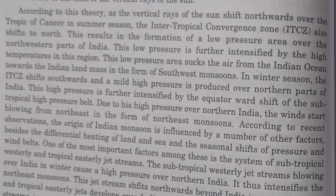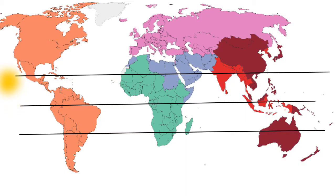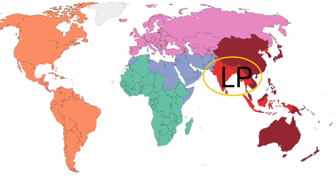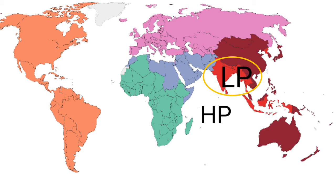Rainfall is caused in the equatorial area, but during the summer season the ITCZ shifts towards the north, as you can see in the diagram. The ITCZ shifts towards the Tropic of Cancer in the month of July. The low pressure already formed over the Indian landmass becomes more intense because of this shifting of ITCZ, which intensifies the low pressure and attracts more wind from neighboring water bodies.